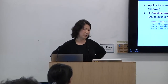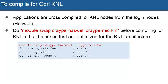To compile for Cori KNL, all you need to do before compilation is swap CrayPE-Haswell to CrayPE-MICKNL. If you do this, then KNL architecture-specific compiler flags will enter your compilation line automatically, and the binary you build will be optimal for KNL.